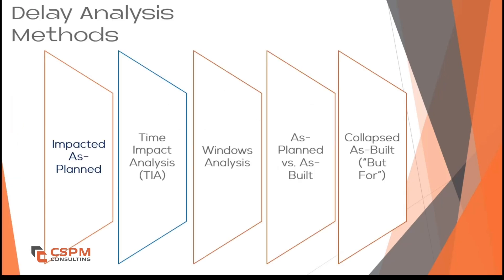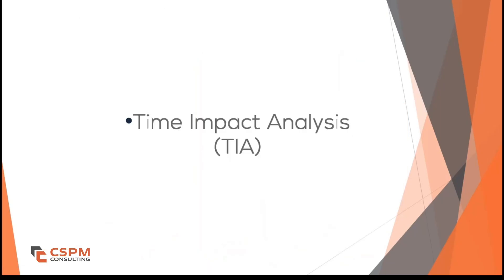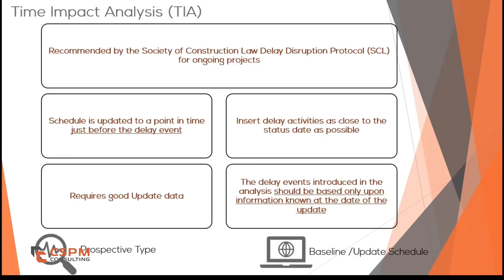To recap, the key types of delay analysis are: Impacted As Planned, Time Impact Analysis, Windows Analysis, As Planned versus As Built, and Collapsed As Built. Today we're going to dive deeper into Time Impact Analysis, or TIA, which is another highly regarded method. TIA is particularly recommended by industry authorities like the Society of Construction Law and their Delay and Disruption Protocol.